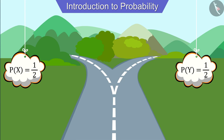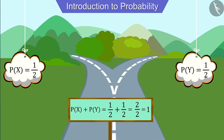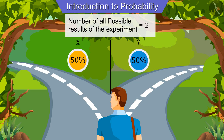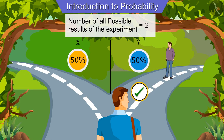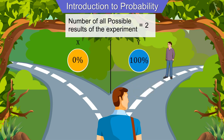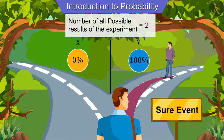Let's come back to our first situation. Joseph was choosing the right path when his friend Mohsin arrives and tells him that road Y is the right way. In such a situation, the probability for road X changes to zero and that of road Y becomes 100 percent, because now we know which is the right path. So walking on road Y is a sure event.